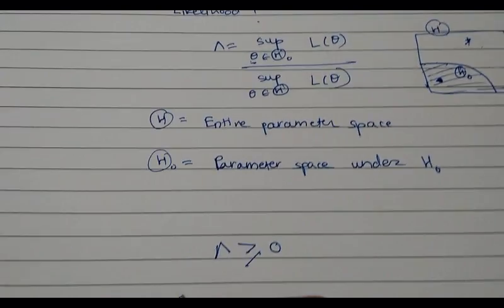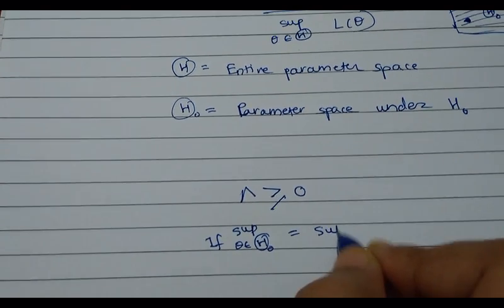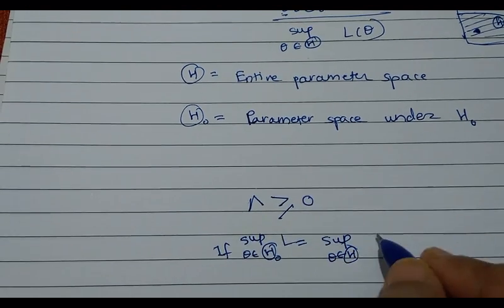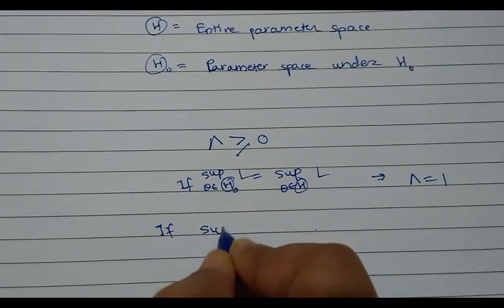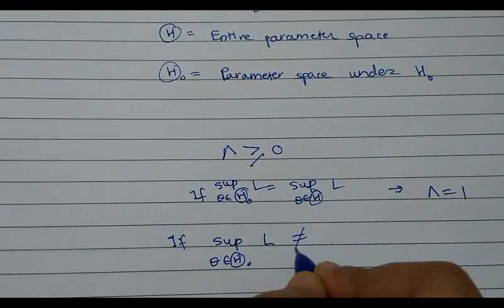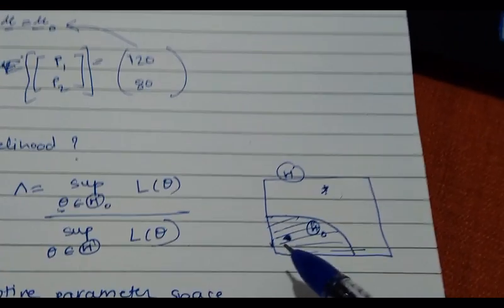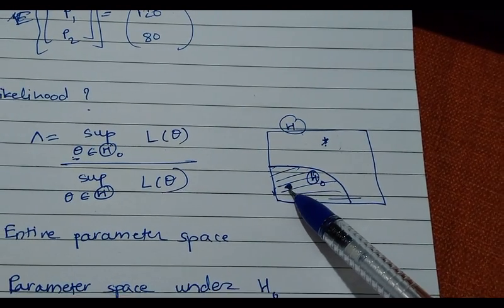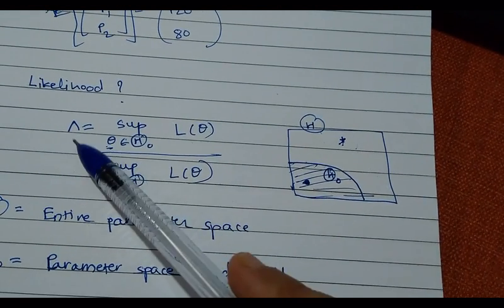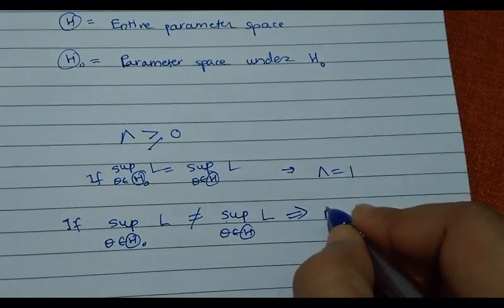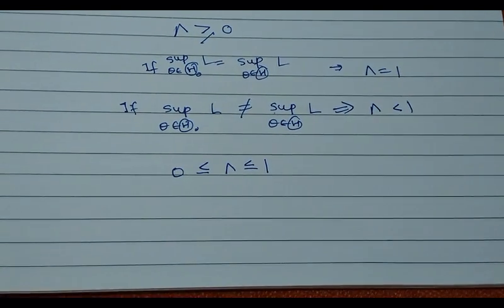If the supremum over script-theta-naught equals the supremum over the entire script-theta, then lambda equals 1. If they are not equal, then the supremum over script-theta-naught is less than the supremum over the entire script-theta — meaning the denominator is strictly larger. As a result, lambda will always be less than 1. In general, lambda is always between 0 and 1. It can never exceed 1. This holds whenever the numerator parameter space is nested under the denominator parameter space.